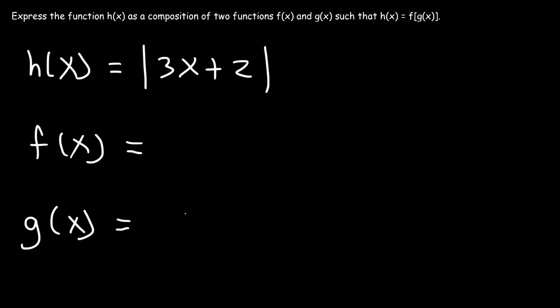We can see that on the inside, we have 3x plus 2, so that's g of x. The outside is the absolute value of x. And that's it.